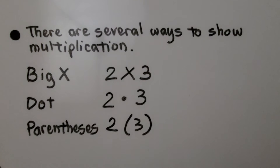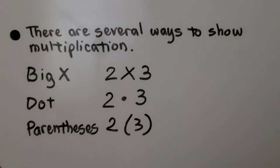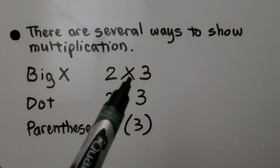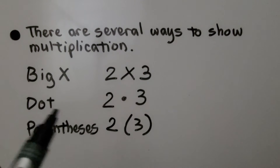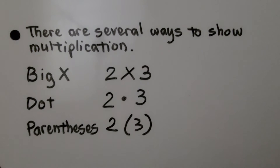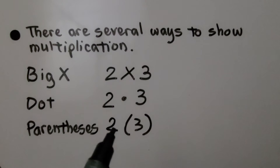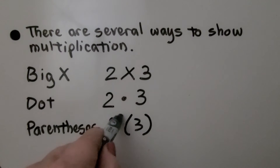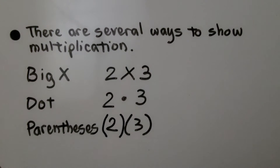Notice I'm using parentheses for multiplication. There are several ways to show multiplication: we can use the big X like in second or third grade, we can use a dot between the factors (2·3), we can use parentheses (2)(3), or both numbers in parentheses — all meaning 2 times 3.